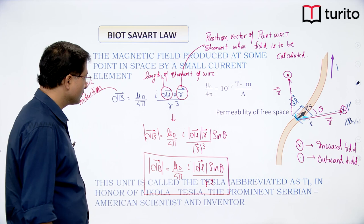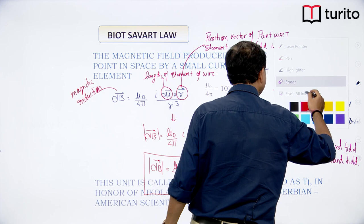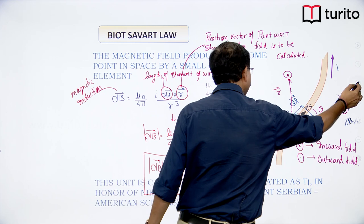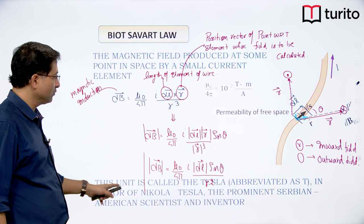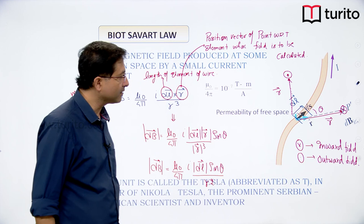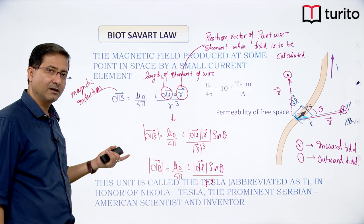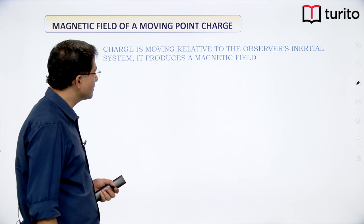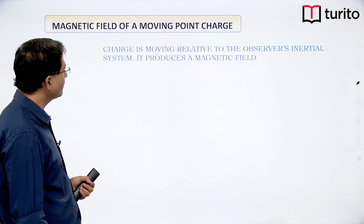The unit of magnetic induction is Tesla, abbreviated as T, in honor of Nikola Tesla. Moving charge relative to an observer produces a magnetic field.